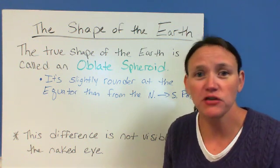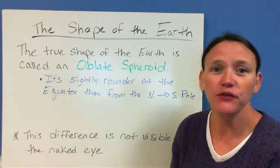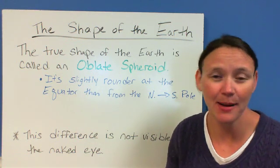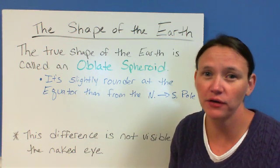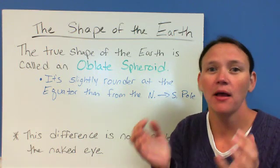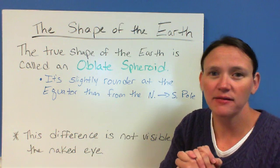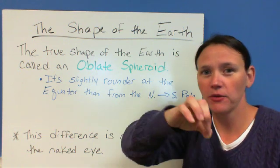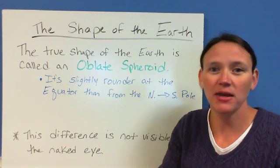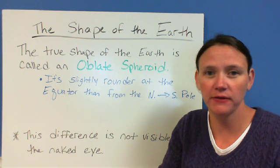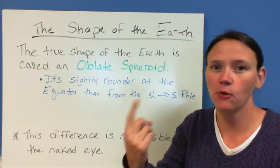So first of all, the shape of the Earth. It's called an oblate spheroid. It's not a perfect sphere. Oblate spheroid means that it's a little bit rounder around the middle than it is on the top. And so if you were to measure from the North Pole to the South Pole, it would be a smaller distance than to measure around the equator.